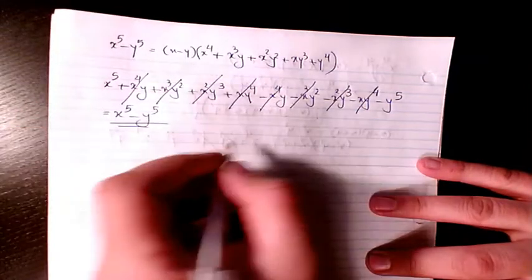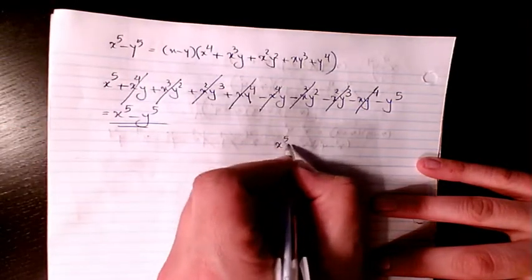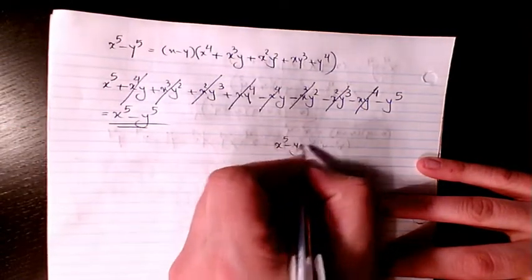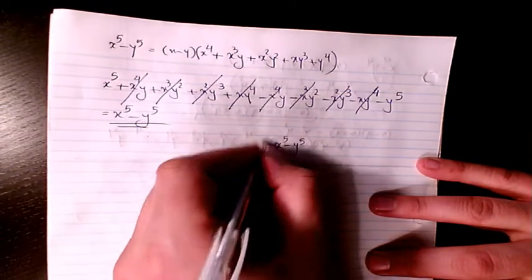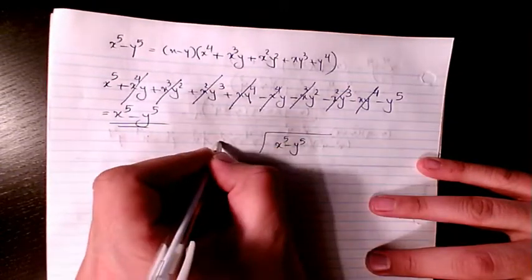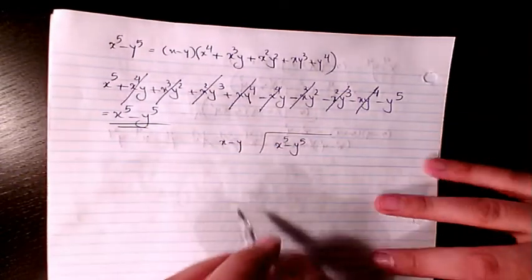From left to right, we have x to the power of 5 minus y to the power of 5 divided by x minus y.